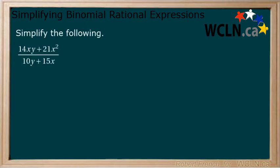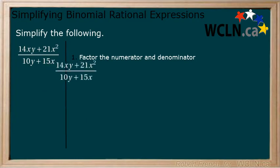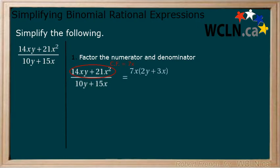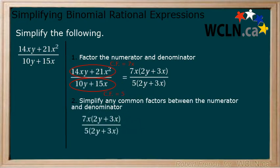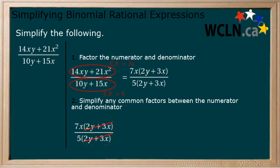Simplify the following rational expression. Step 1: factor both the numerator and the denominator where possible. The numerator has a common factor of 7x. When we factor it out, we have 7x multiplying 2y plus 3x. The denominator has a common factor of 5. When we factor it out, we have 5 multiplying 2y plus 3x. Step 2: simplify any common factors between the numerator and the denominator. We have 2y plus 3x as a common factor. When we cancel it, we are left with a final answer of 7x over 5.